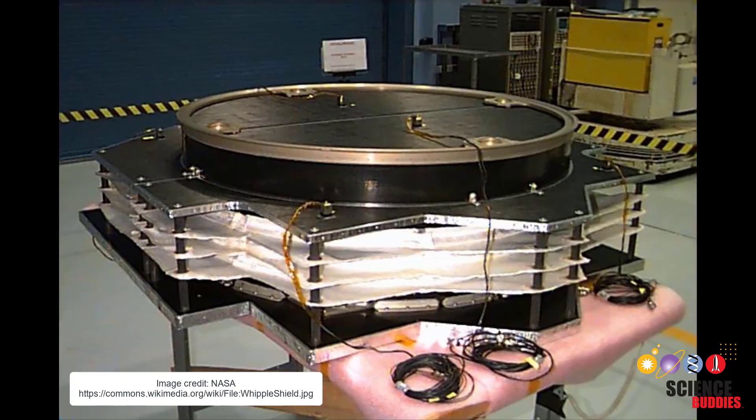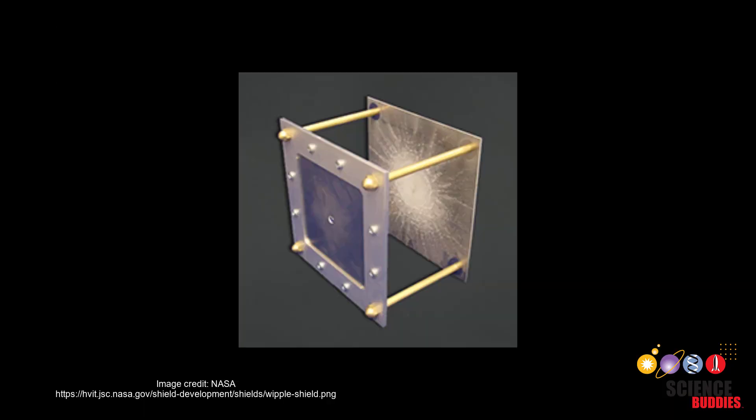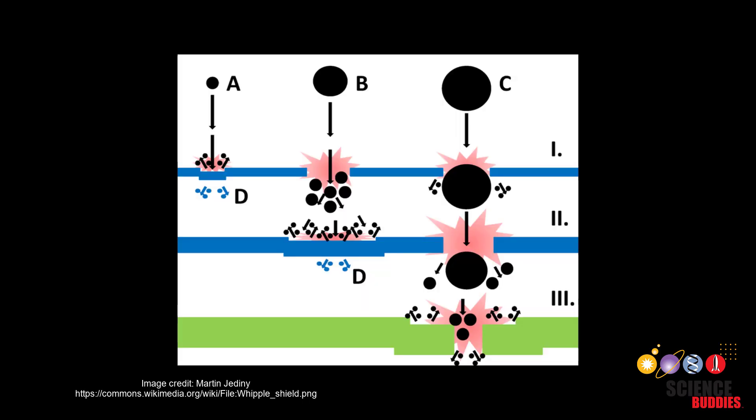The basic idea behind a Whipple shield like the one pictured here is not to always completely stop debris. It's to break the debris up into smaller pieces and spread the impact over a larger area so it doesn't puncture the outer wall of a spacecraft.